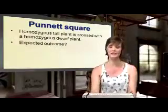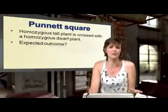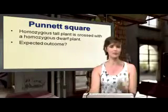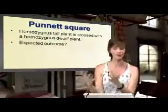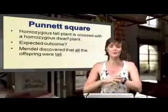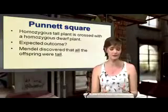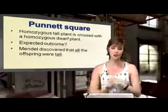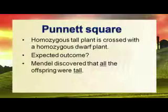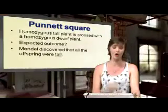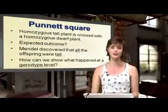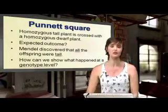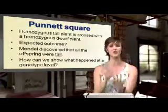We want to know what the expected outcome is. If you just have a tall pea plant and a dwarf pea plant, how do you know what's going to come out after the cross? That's what Mendel did. He found that if we cross a homozygous tall plant with a homozygous dwarf plant, all of the offspring are tall. Their phenotype is tall. We use the Punnett square to discover the genotype, because we can't tell the genotype just by looking at a plant.